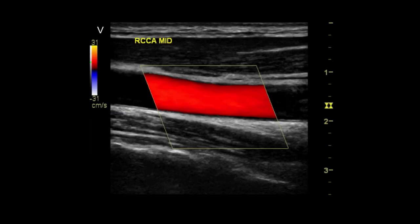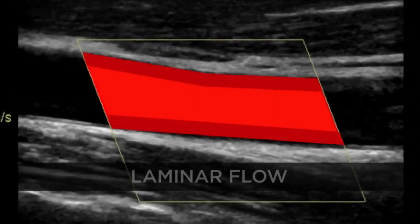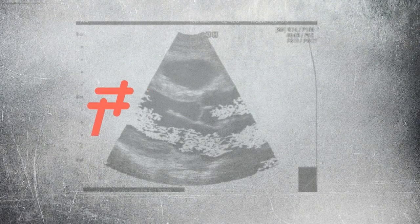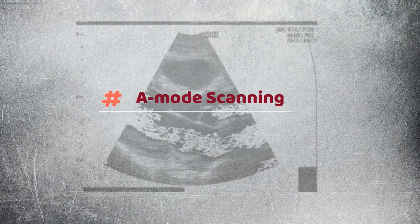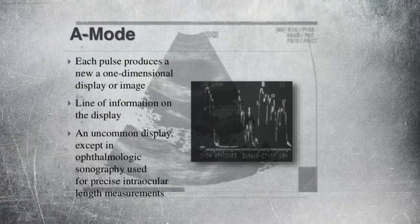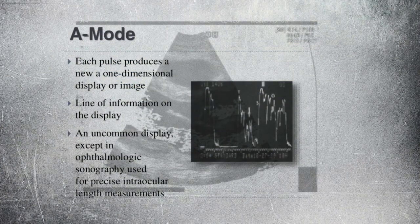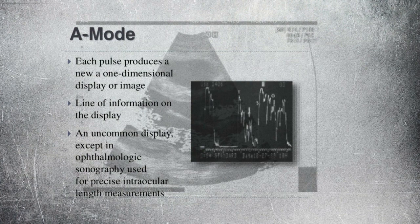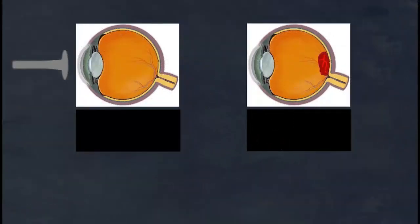Let's know about A, B, C and M modes. A-mode is the simplest type of ultrasound. A single transducer scans a line through the body with the echoes plotted on a screen as a function of depth. Therapeutic ultrasound, aimed at a specific tumor or calculus, is also A-mode, to allow for pinpoint accurate focus of the destructive wave energy.